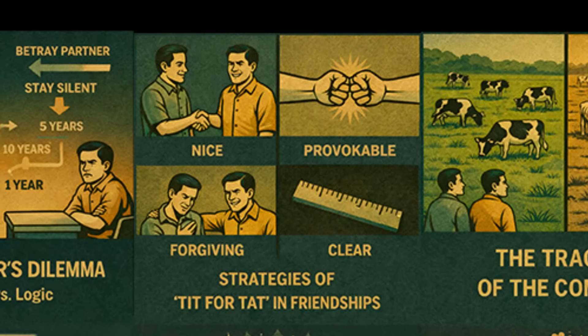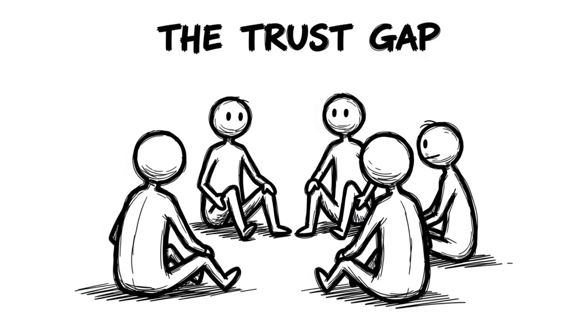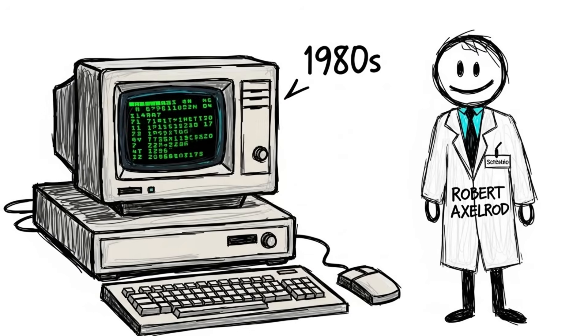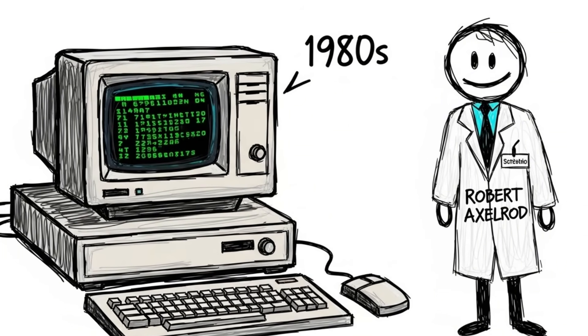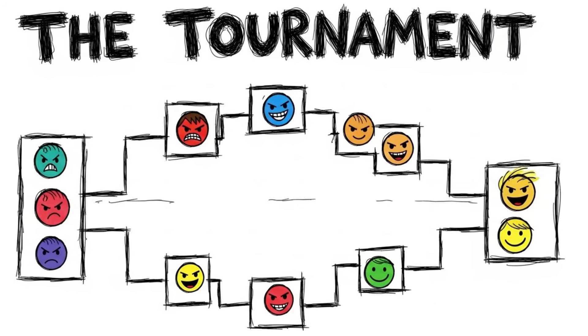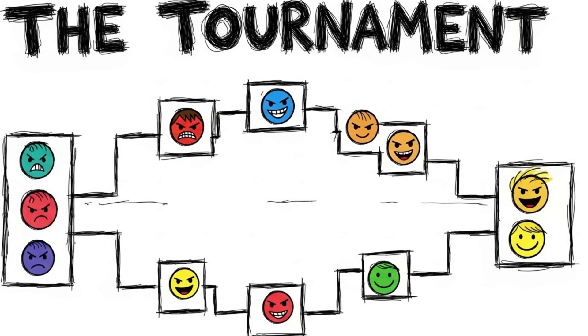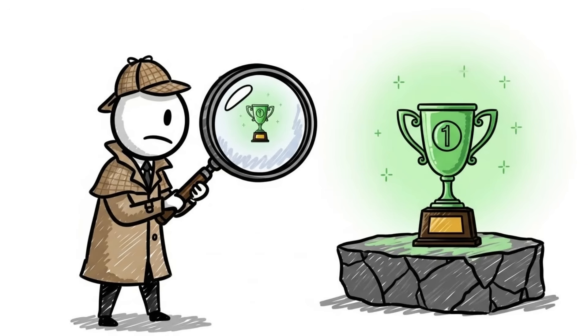Strategies of tit-for-tat in friendships. So, is the world just a bleak landscape of inevitable betrayal? Surprisingly, no. In the 1980s, political scientist Robert Axelrod organized a massive computer tournament. He invited experts to submit programs that would play the prisoner's dilemma against each other repeatedly, thousands of times. He wanted to find the ultimate strategy for life.